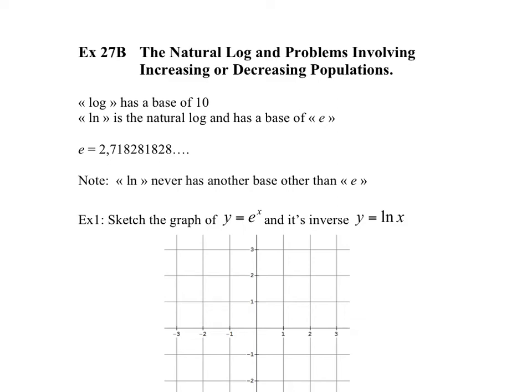Hi students, welcome to exercise 27b, problems with natural logs and increasing, decreasing populations. The log we've been working with so far, unless we've given it a base, it has a base of 10. We're going to introduce here a new log function, has all the exact same properties, except that it has a particular base, we call this the natural log, and has a base of e. And for now, without going into too much detail, we're going to take e as 2.718 up to infinity. So this is an irrational number, it cannot be written as a fraction. For our discussion's sake, we're going to go with e is equal to 2.7.